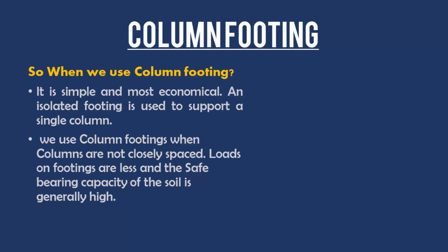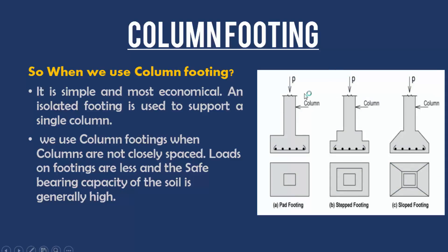The first type is column footing. It is simple, most economical, and as an isolated footing it is used to support a single column. We use column footing when columns are not closely spaced, loads on the footing are less, and the safe bearing capacity of soil is generally high. The load coming from the column is transferred to the base or the soil beneath the footing.